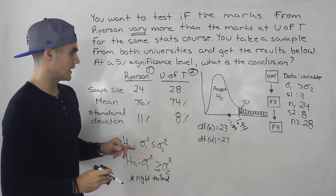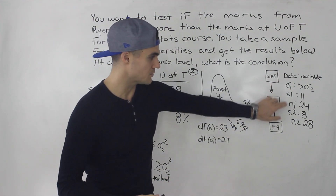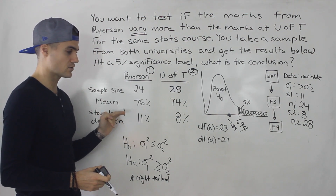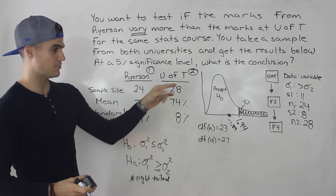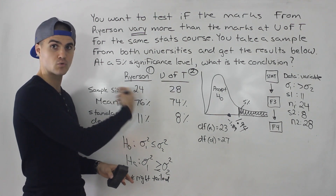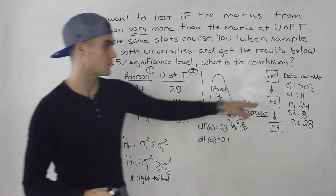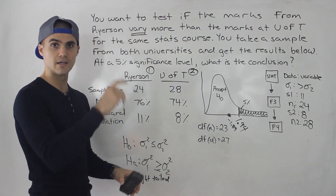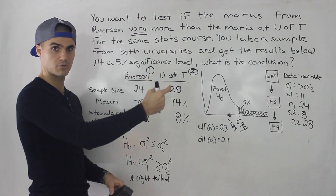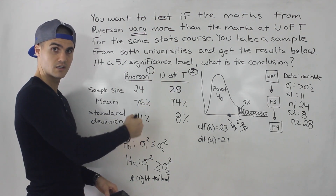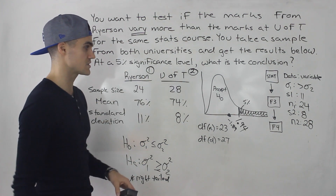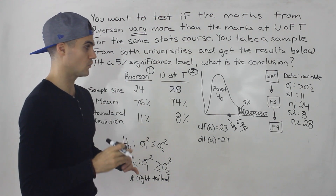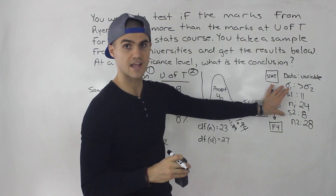One important note: the calculator inputs always require sample standard deviations. If the problem gives you sample variances instead, you need to take the square root before entering them. Conversely, when computing the test statistic manually, you use variances — so if standard deviations are given, you square them. Just be aware: manual calculation uses variances; calculator input uses standard deviations.